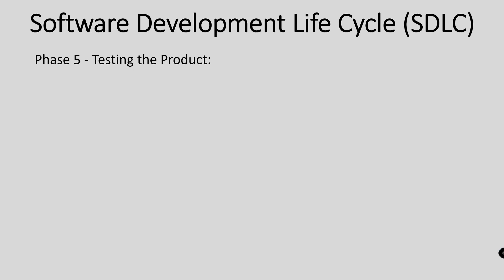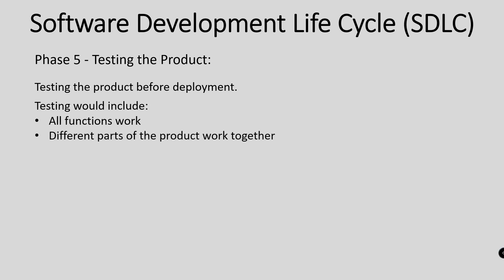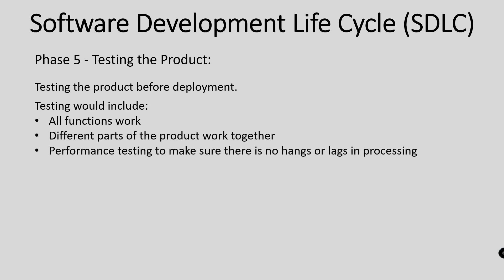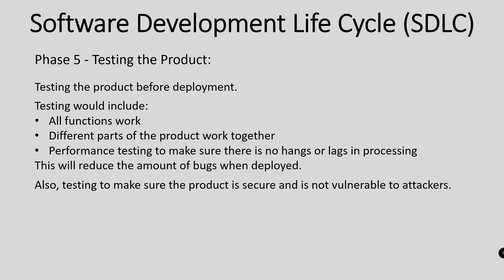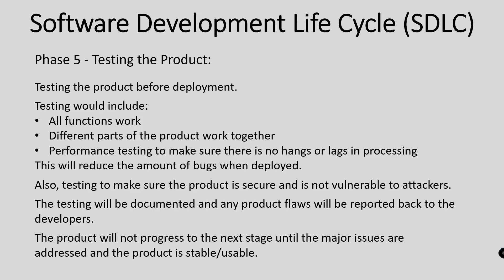Phase 5: testing the product. Testing the product before deployment would include checking that all functions work, that different parts of the product work together, and performance testing to make sure there are no hangs or lags in processing. This will reduce the amount of bugs when deployed. Testing also ensures the product is secure and not vulnerable to attackers. The testing will be documented and any flaws will be reported back to the developers. The product will not progress to the next stage until the major issues are addressed and the product is stable.